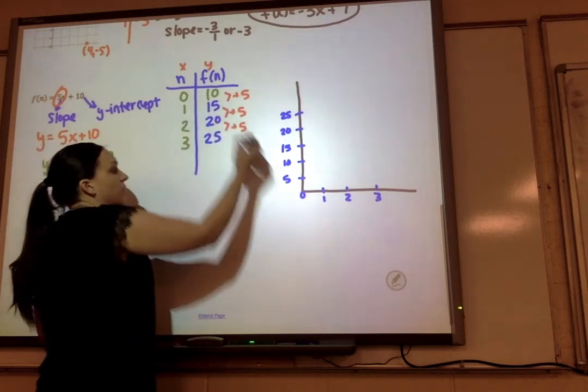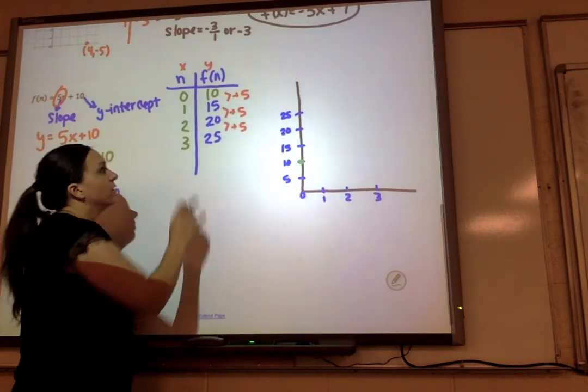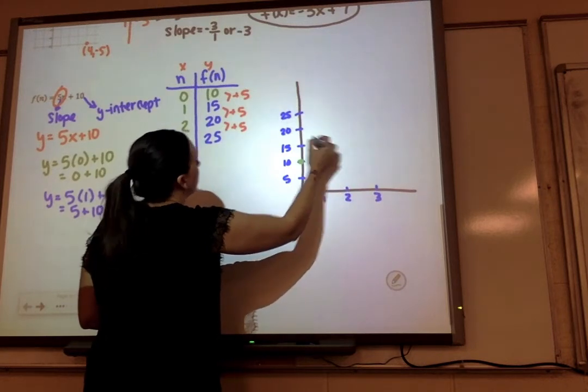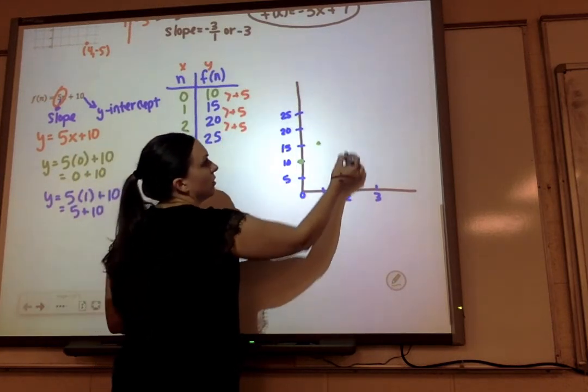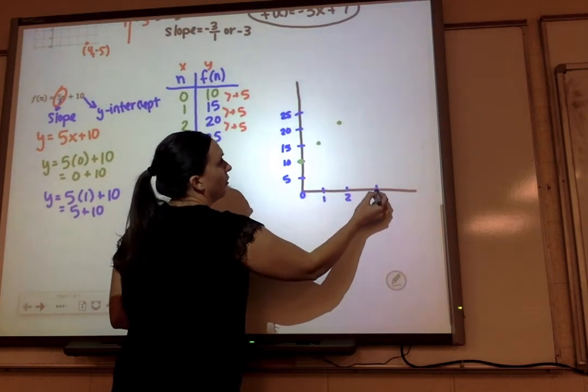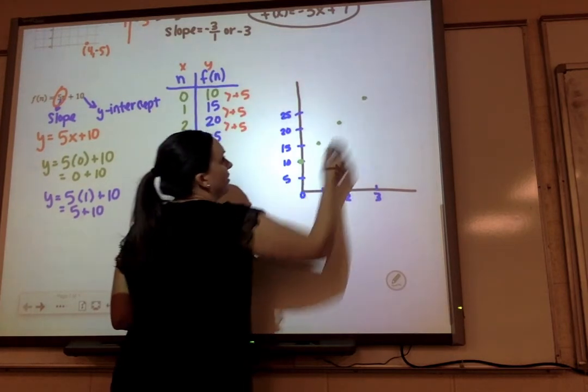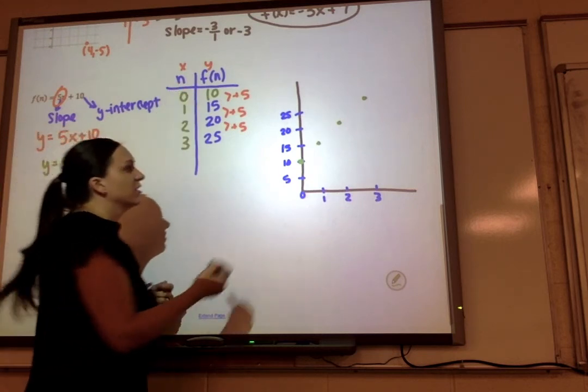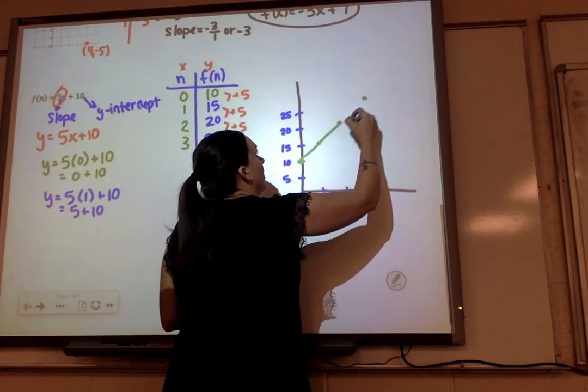So 0, 10, over 1, up 15, over 2, up 20, over 3, up 25. And the linear equation, that's what this is, will make a straight line.